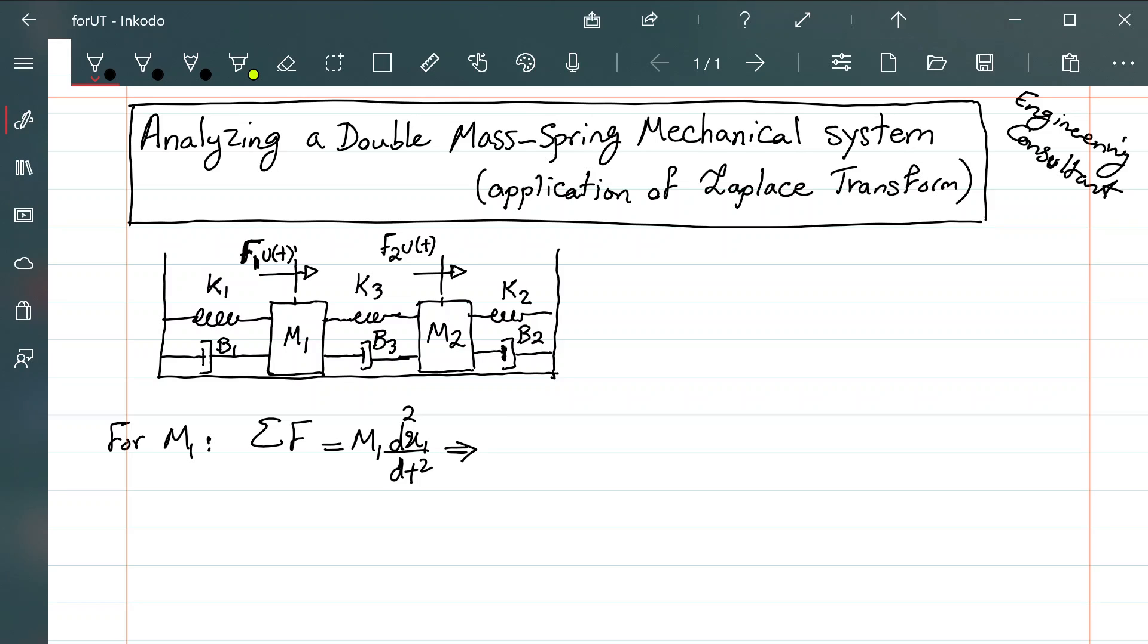So the only thing we need to do is just finding all these forces. So what we have is, we have force f1 u(t). And then, of course, counteracting the force will be the force from the spring k1. So we know that that is proportional to displacement, so it will be k1 x1. And x1 is a function of time. And then, also, the b1 is going to contribute in the form of minus b1 times the first derivative of the displacement, which is the speed.